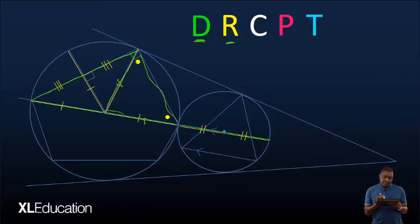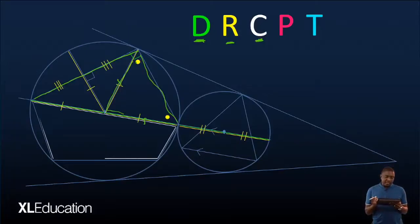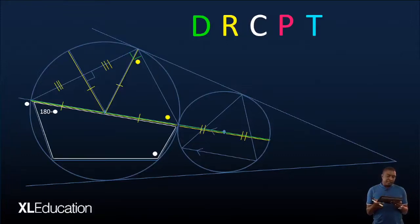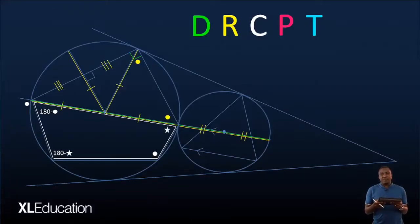Now let's look for any cyclic quads. You can see this cyclic quad highlighted in white. Because of that, these two angles are equal. Also, the opposite interior angles are supplementary, and the same applies to the other pair of supplementary angles. There is no more cyclic quad here.